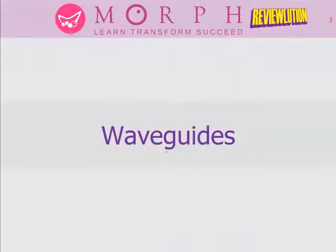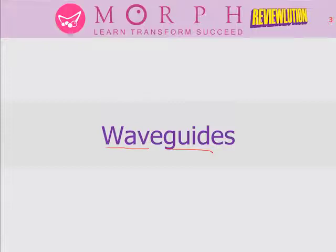Let's define first what a waveguide is. Basically, it's the guide for your electromagnetic wave — that simple. Transmission lines carry signals from transmitter to receiver, but the difference is that transmission lines are intended to be used at the lower spectrum, while waveguides are used in the microwave range.